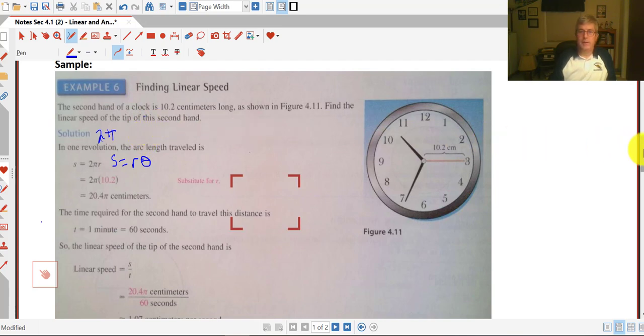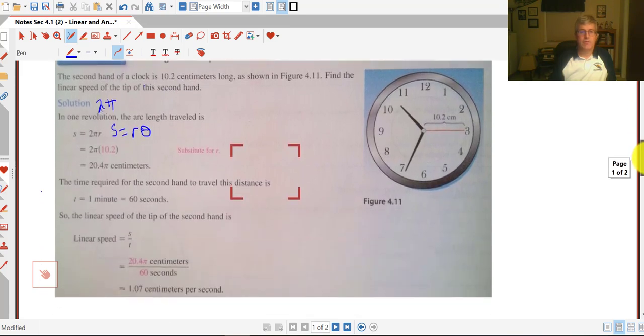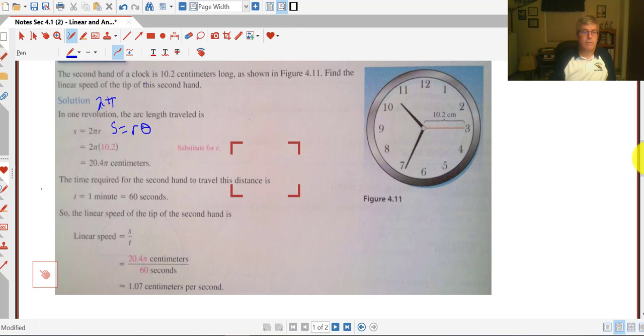Well, our linear speed is calculated by s divided by t. First we need to figure out s and s is equal to r times theta. One revolution is 2 pi units. So s equals 2 pi times r.